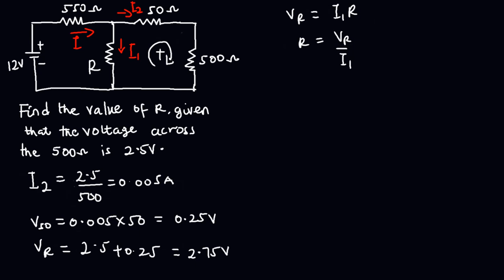How do we find the value of I1? We can use the formula I equals I1 plus I2, where I1 equals I minus I2. So before we can find I1, we need the value of I. We already know I2, which means we need to find I. I is the current flowing through the 550 ohms resistor, so we need to find the voltage drop across it.